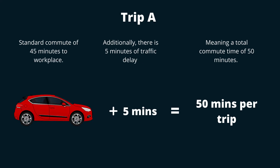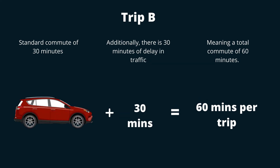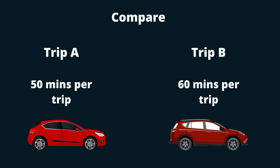While person 1 experiences a longer standard commute because they live further, their LOS is much better because they are only delayed by 5 minutes. In contrast, person 2, who lives closer but experiences more traffic, has a poor LOS. Therefore, person 1 experiences a better LOS than person 2.